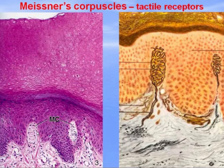In the papillae there are Meissner's corpuscles — tactile receptors sensitive to touch and pain. They are especially numerous in the fingers; blind persons can use these receptors to read the Braille alphabet.